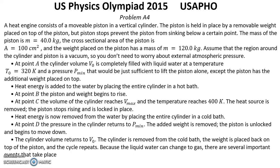Heat energy is added to the water by placing the entire cylinder in a hot bath. At point B, the piston and weight begin to rise. At point C, the volume of the cylinder reaches V maximum and the temperature reaches 400 kelvins. The heat source is removed, and the piston stops rising and is locked in place.